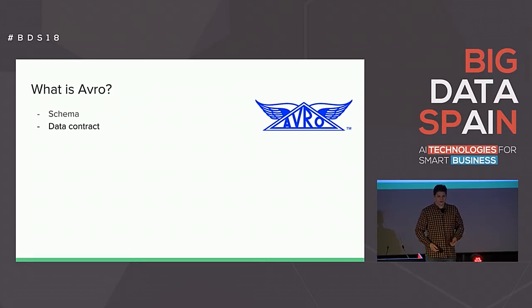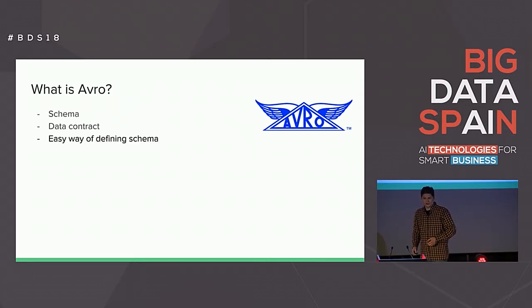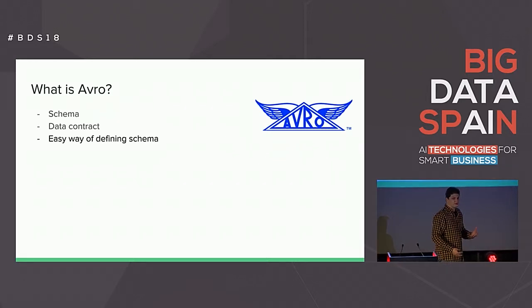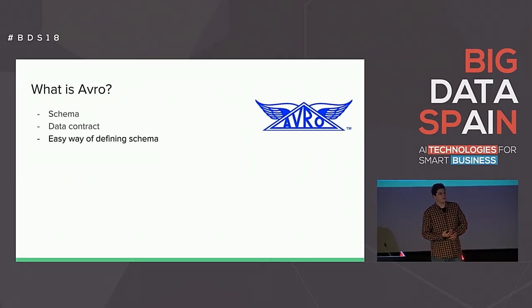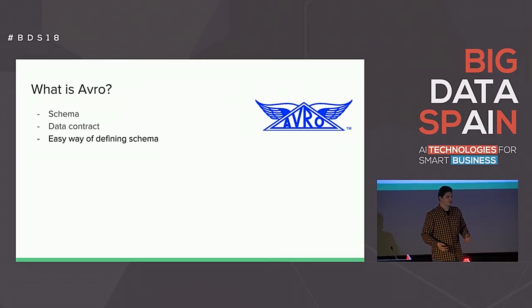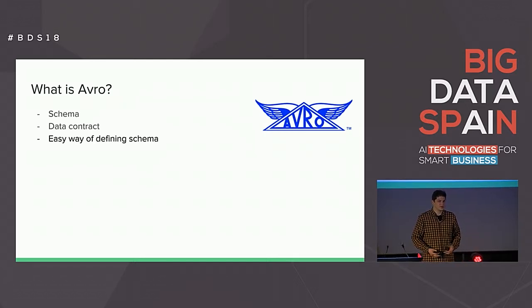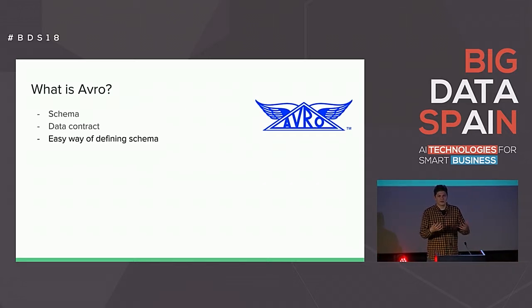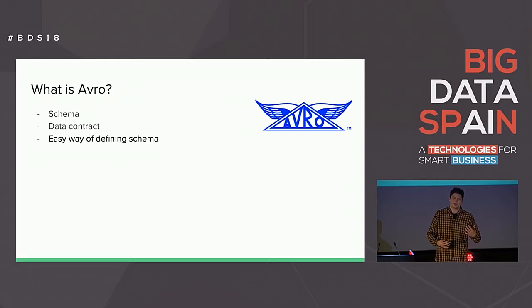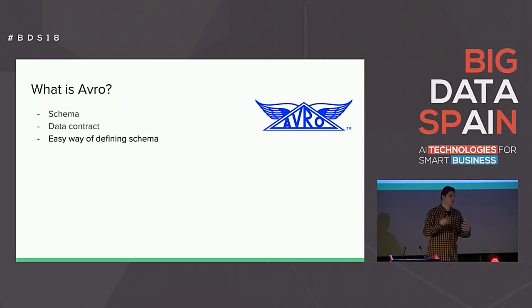If we've got a schema, we can start thinking about a data contract — and this data contract is between someone who is producing Avro messages and someone who is consuming these Avro messages. This is a baseline to connect both sides of the pipeline. And in Avro, schema definition is quite easy because you define the schema in JSON format, which is popular and easy to maintain and review.